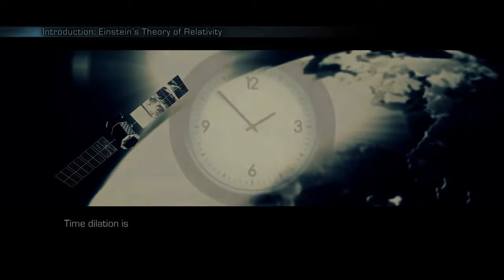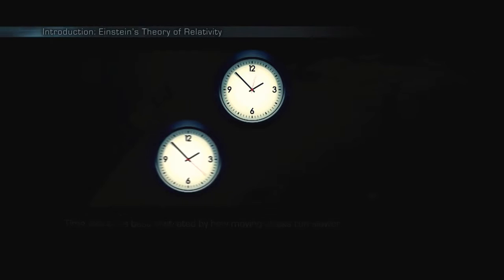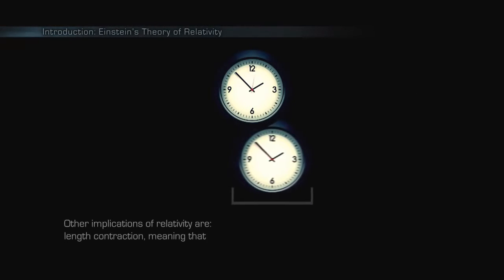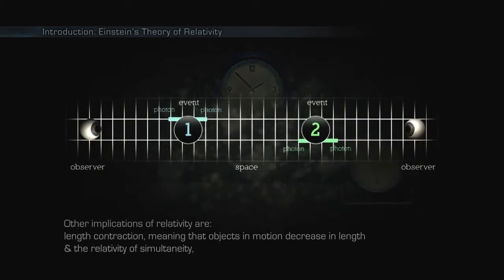Time dilation is best illustrated by how moving clocks run slower. Other implications of relativity are length contraction, meaning that objects in motion decrease in length, and the relativity of simultaneity.